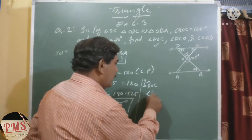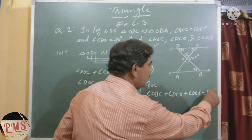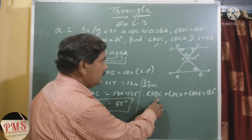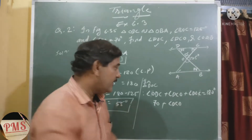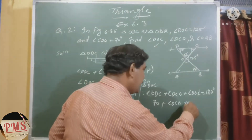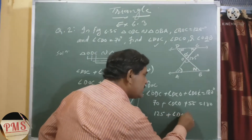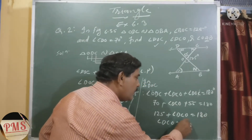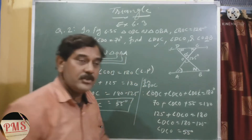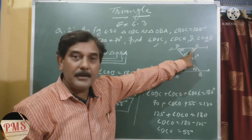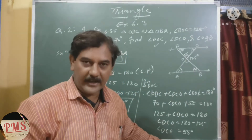So 70 plus angle DCO plus 55 equals 180 degrees. The sum of 70 and 55 is 125, so angle DCO equals 180 minus 125, which is 55 degrees. We can verify: 55 plus 55 plus 70 equals 180 degrees. Our answer is correct.